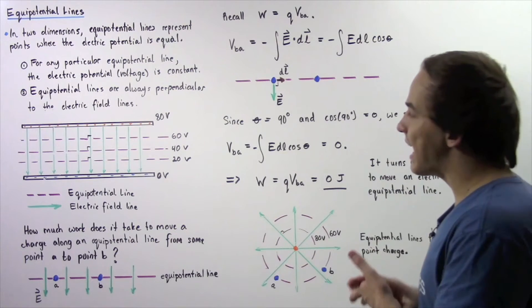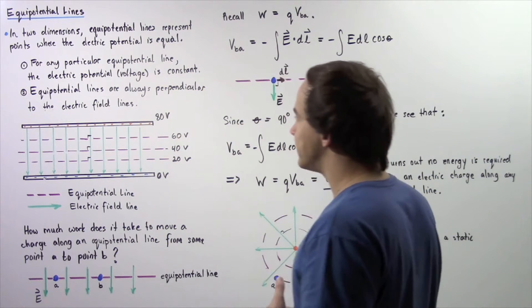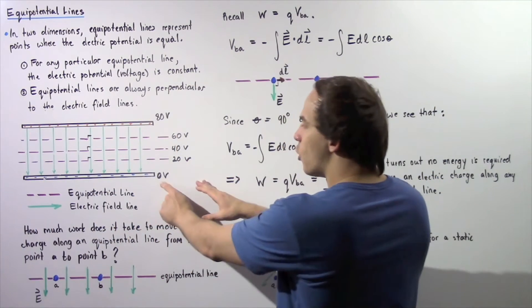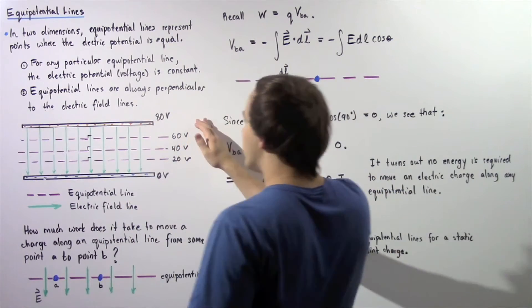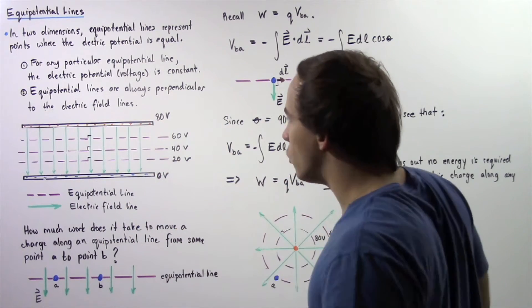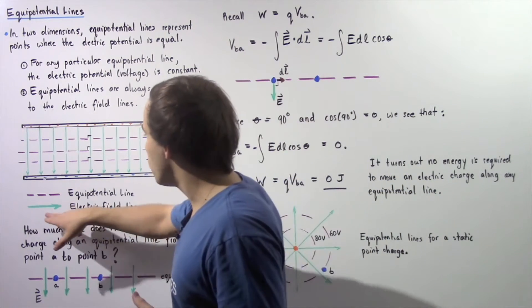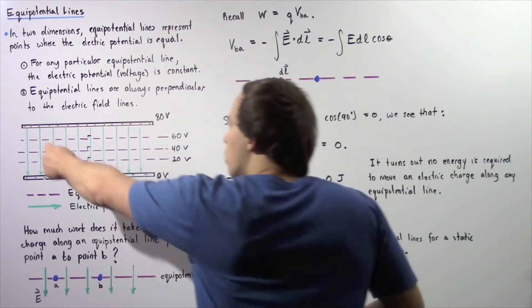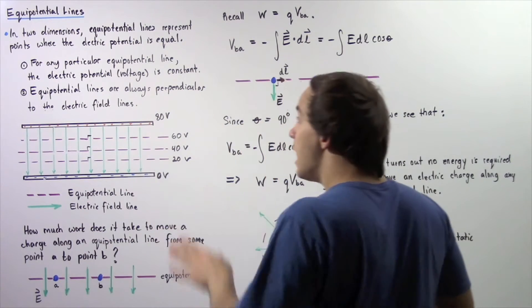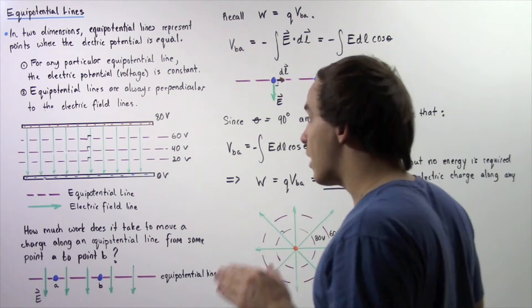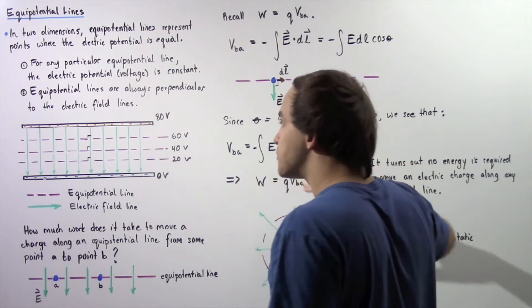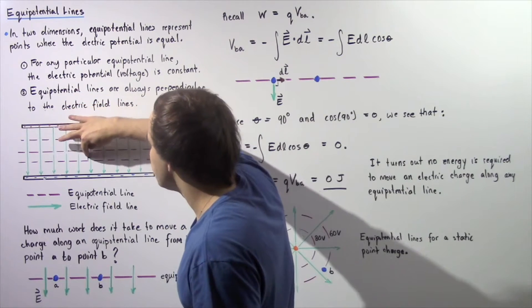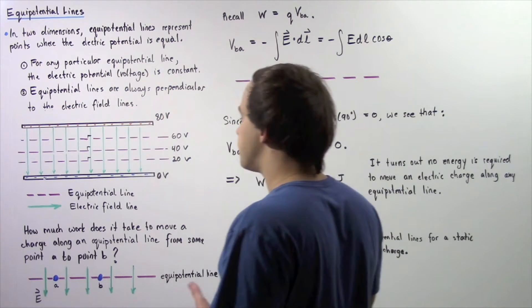Let's see what we mean by that by looking at the following diagram. We have a parallel plate — a negative plate where we choose our voltage to be zero and a positive plate where we choose our voltage to be 80 volts. Our electric field lines shown in green will begin on the positive side and end on the negative side. Our Equipotential Lines will run directly across, lying along the horizontal axis and pointing at a 90 degree angle with respect to each particular electric field line.